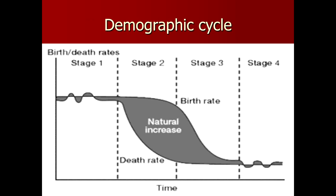The demographic cycle shows multiple stages. In stage one, fertility and death rates were compensating each other, so there was no increase in population — birth rates were high, death rates were high. In stage two, the birth rate remained very high but the death rate started declining due to control of epidemics and communicable diseases, resulting in a natural increase in population.